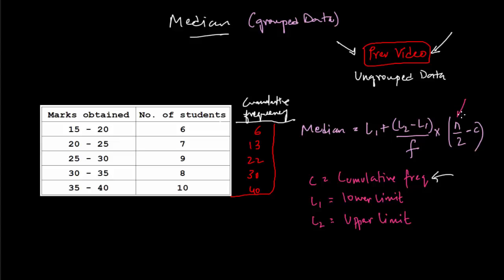Now let's find the value of N. If you remember from previous videos, N is equal to summation of F. So F is the frequency column. Here it is the number of students. We have to find the summation of it. Meaning, we have to add the complete value in that column. So it's going to be 6 plus 7 plus 9 plus 8 plus 10. And that is equal to 40. So if it is an even value, we will divide it by 2. And if it is an odd value, we will do N plus 1 by 2. So 40 is an even number. Therefore, N by 2 is equal to 20.